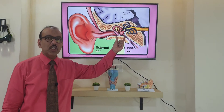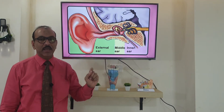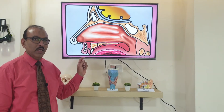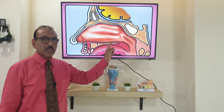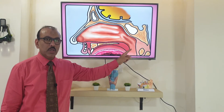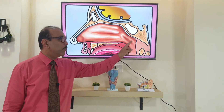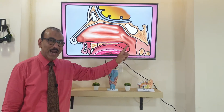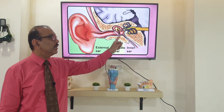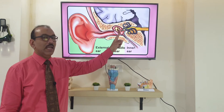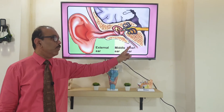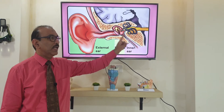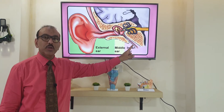For the normal functioning of the middle ear, it needs air inside. The air from outside, through the nose, reaches the posterior part of the nose. This posterior part is called the nasopharynx, and through a small opening there, air reaches the middle ear. The tube which connects the nasopharynx and the middle ear is called the Eustachian tube.